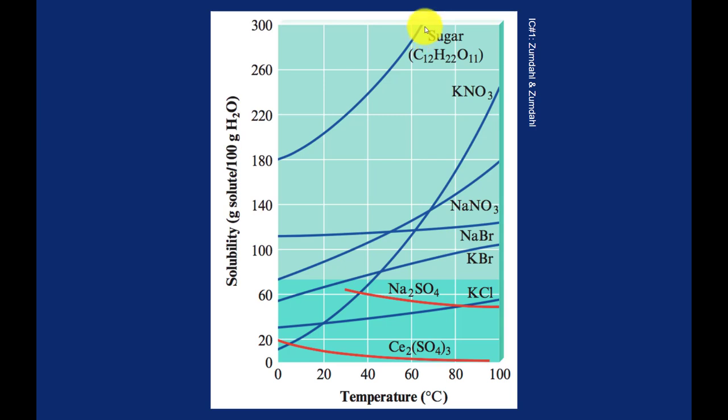So for example, this curve ends at just over 60 degrees, maybe 65 degrees, and it's saying that you can dissolve 300 grams of sugar in 100 grams of water, which leads to a little bit more vocab here.